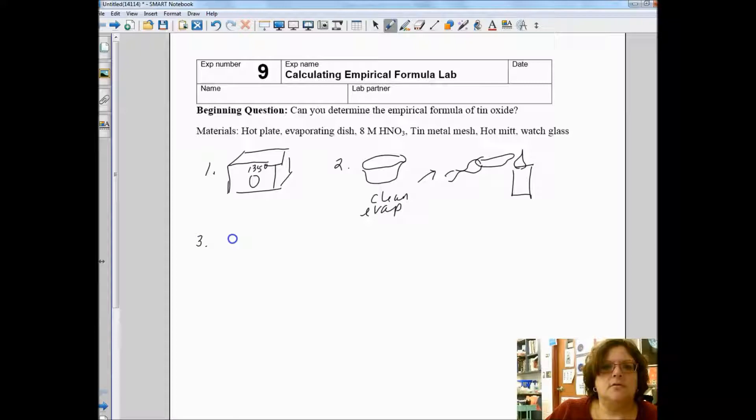Step three, you're going to find the mass of your evaporating dish, put it on the balance. After you've recorded your evaporating dish mass, you're going to add about two grams of tin.